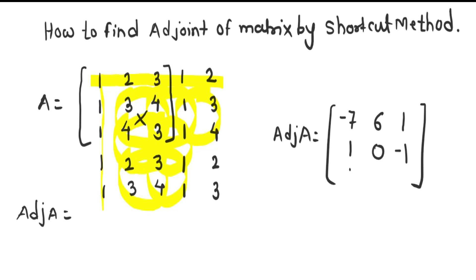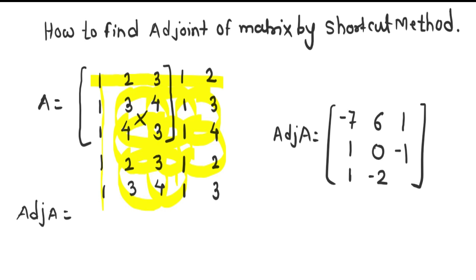4 minus 3 becomes 1. Next, we take the last 2 by 2 matrix. The multiplication gives 3 minus 2, which becomes 1. So this is the adjoint of this matrix. With the help of this shortcut method we can easily calculate the adjoint of matrix A.